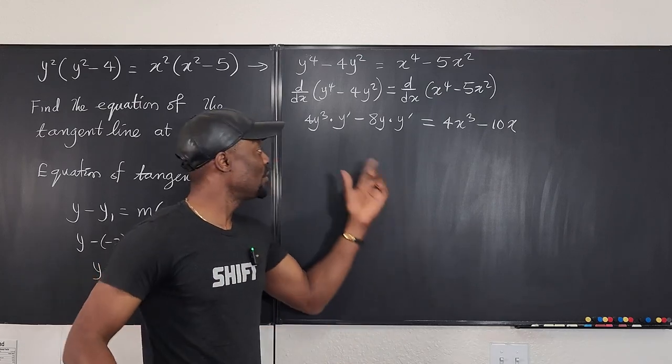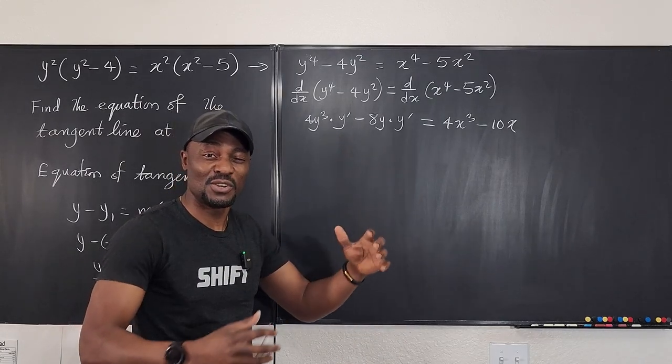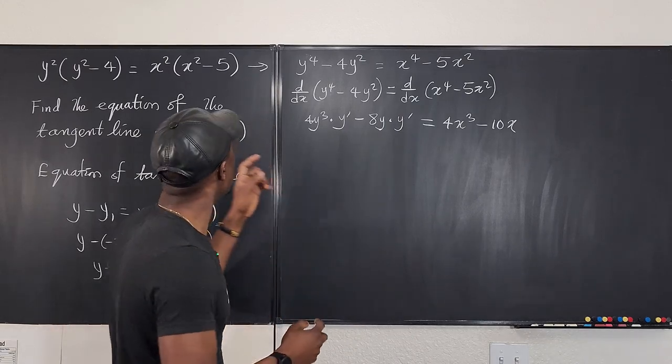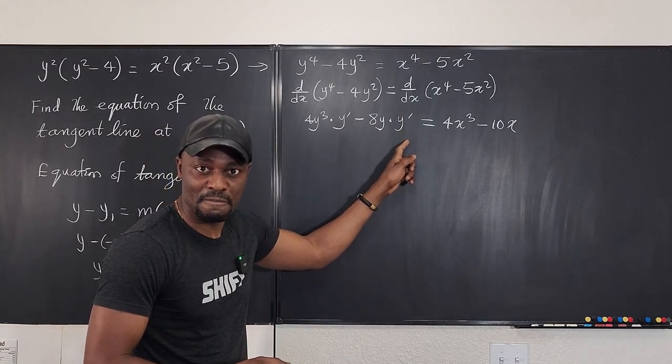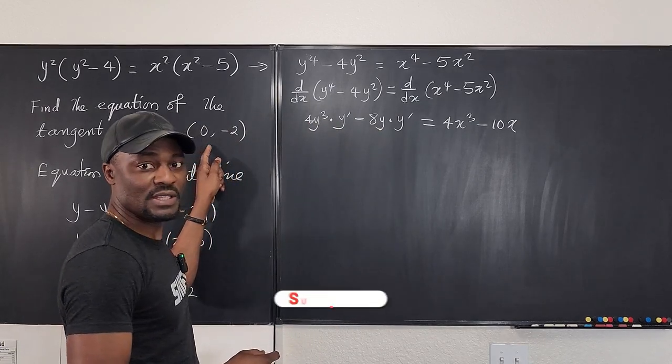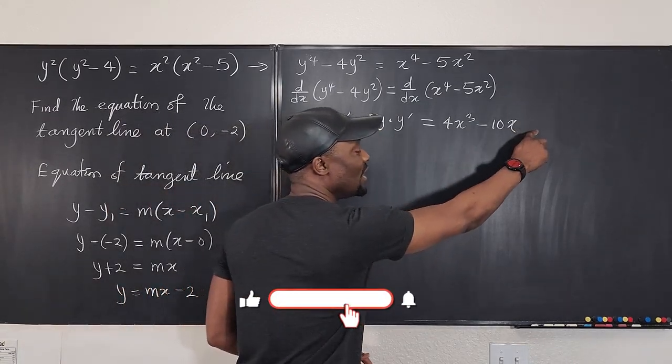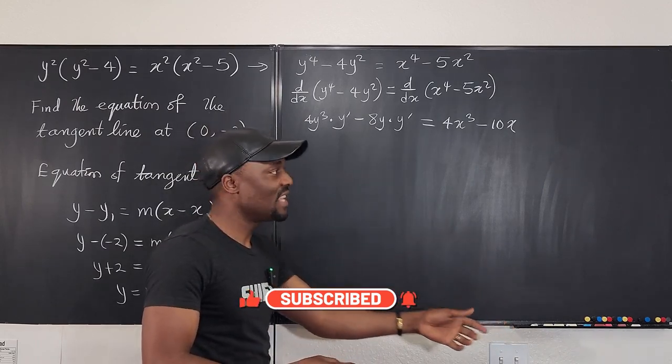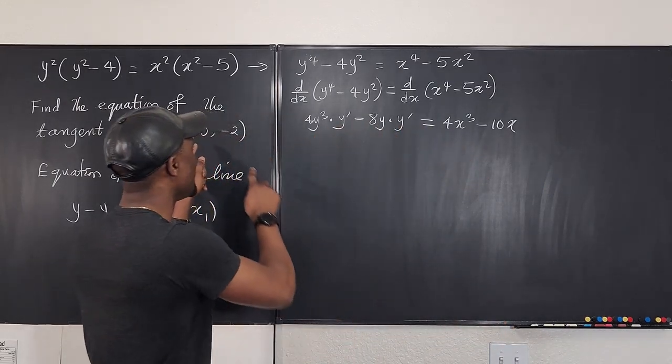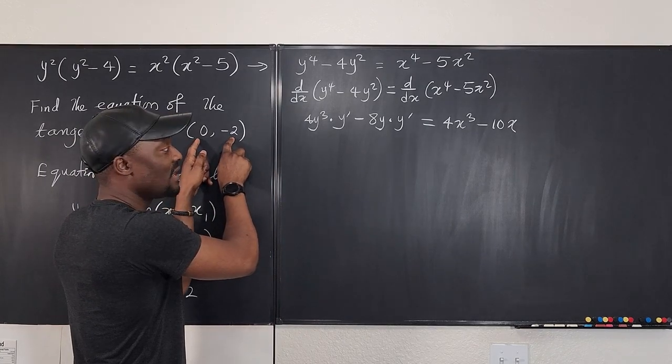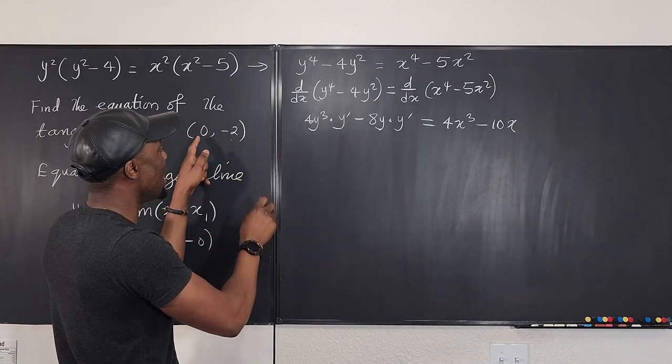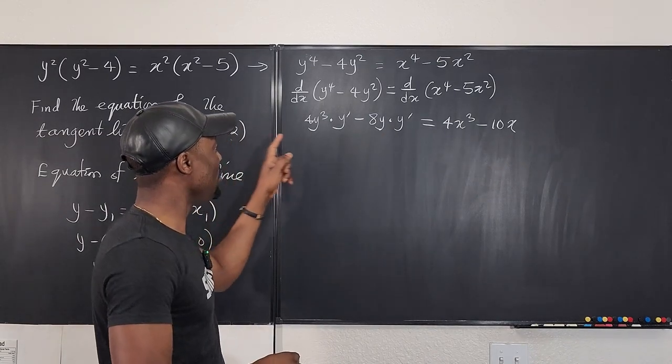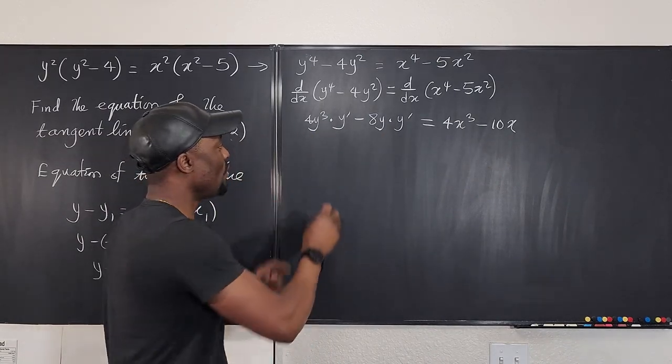Now do not go ahead because you don't need to know what y prime is in terms of a function. What you want to get is basically the value of y prime at this point. So as soon as you take the implicit derivative or you differentiate implicitly and you get your y prime showing up just go plug in the values of x and y at that point. So what I'm going to do is everywhere there is x I'm going to plug in zero and everywhere there is y I'm going to plug in negative 2 so watch this.